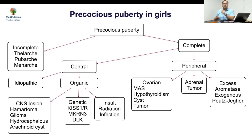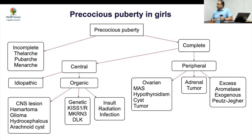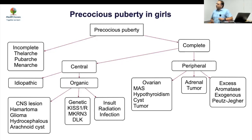Within the complete range, most cases are central and idiopathic, so it becomes easy to determine whether it is central or peripheral, and mostly it's idiopathic, meaning MRI is not required in most cases. If you proceed to peripheral causes, it becomes more complex — mainly ovarian or adrenal causes are the major aspects to consider.